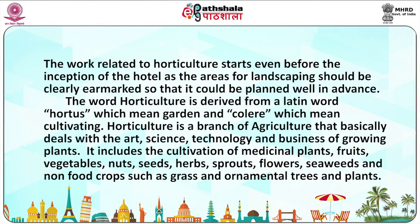Students, let us understand the meaning of horticulture. The word horticulture is derived from a Latin word hortus, which means garden, and collar, which means cultivating. So horticulture is a branch of agriculture that basically deals with the art, science, technology and business of growing plants. It includes the cultivation of medicinal plants, fruits, vegetables, nuts, seeds, herbs, sprouts, flowers, seaweeds and non-food crops such as grass and ornamental trees and plants.